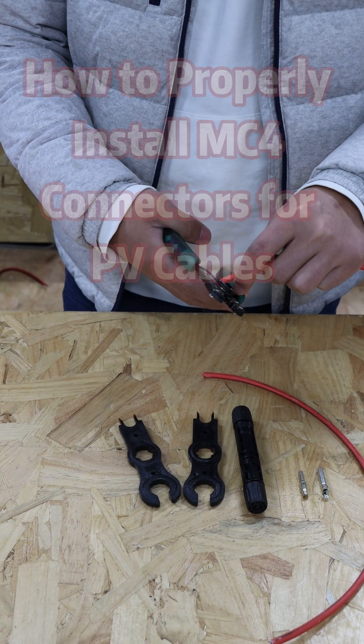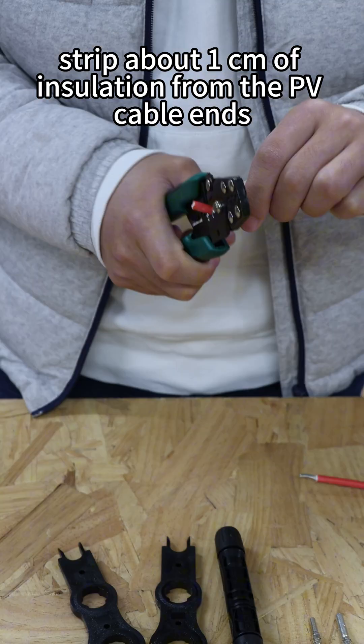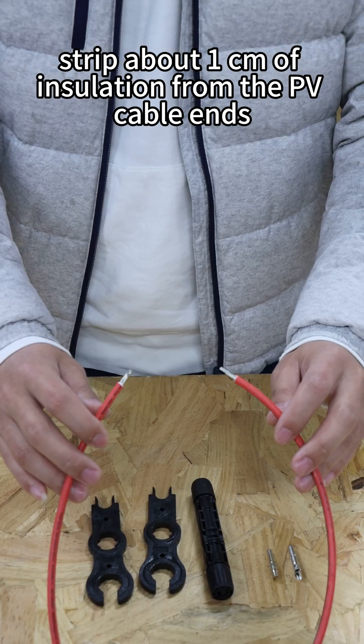First, strip about 1 cm of insulation from the PV cable ends.